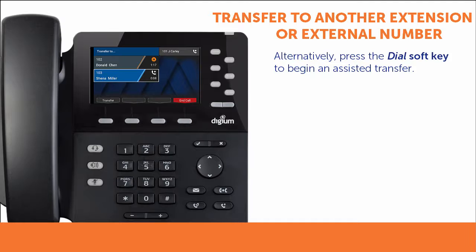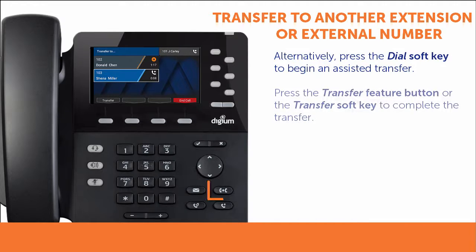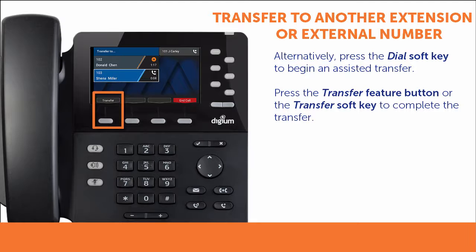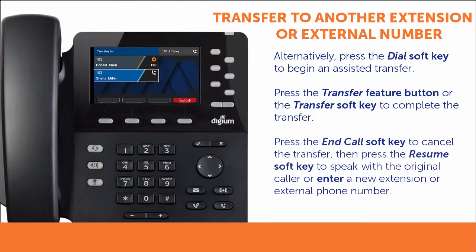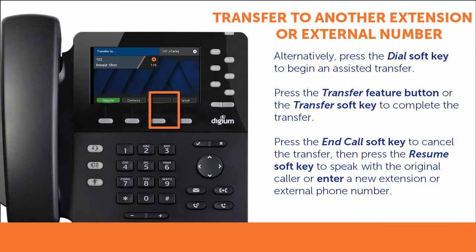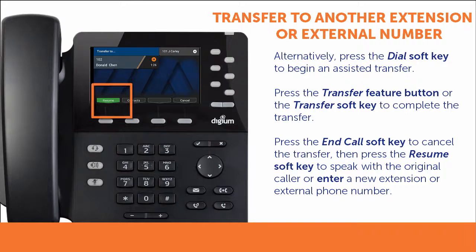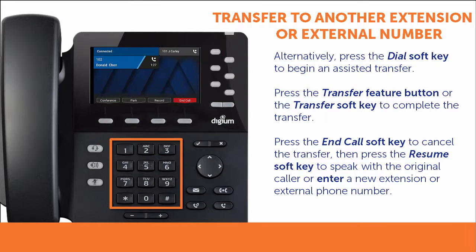If you wish to complete the assisted transfer, press the Transfer Feature button or soft key while speaking with your contact. If you wish to cancel the assisted transfer, press the End Call soft key. You may then press the Resume soft key to speak with the original caller or enter a new extension or phone number to try again.